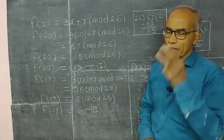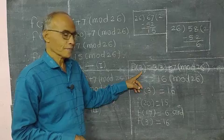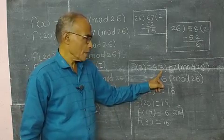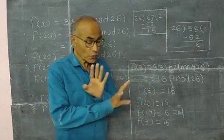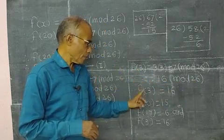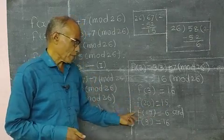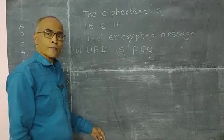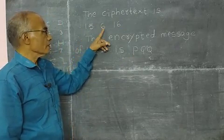Similarly find f of 17. Put instead of x, 17. So 17 threes are 51, 51 plus 7 is 58 mod 26 as it is. 58 divided by 26, this is rough work, 26 goes 2 times, 52, remainder is 6. This 6 is less than 26, it's ok. So f of 17 is 6.